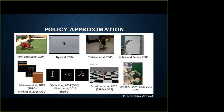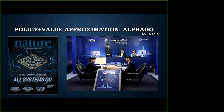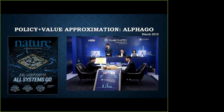Policy and value function approximation was used in something called the AlphaGo agent, used to play against Lee Sedol — a top Go player — and beat him. This was very publicized back in March 2016. The agent uses policy function approximators and value function approximators as building blocks. Note some differences: this is a game, so it's not stochastic, but the environment includes another agent — another player — who is trying to beat you.